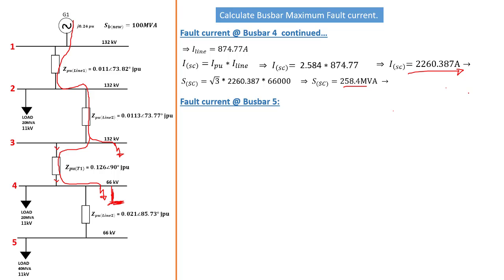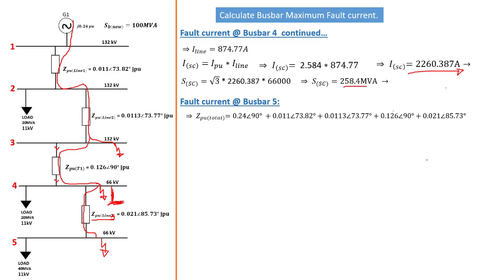Moving on to fault current on bus bar five. The same procedure applies. The current will now take this path — which is only possible if there is no short circuit before this point — and must now pass through line three's per unit impedance. Note there is a typo in the diagram; that line should be labeled line three, not line two. The current takes this new path, and for Z per unit total we add all per unit impedances from the generator: line one, line two, transformer, and now line three.